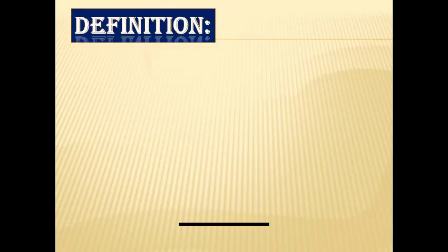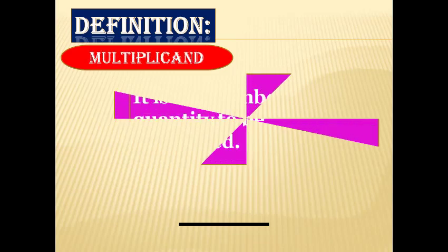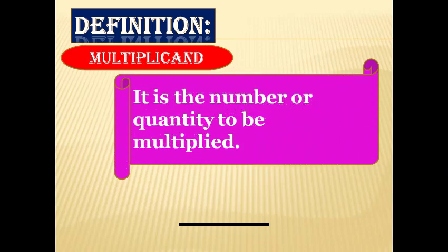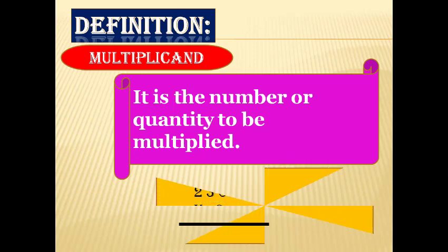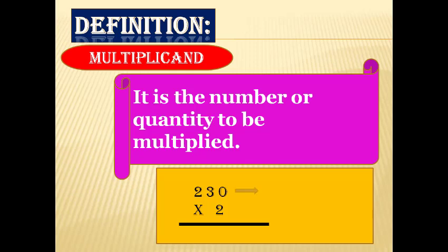Definition of multiplicand: It is the number or quantity to be multiplied. In this example, 230 multiplied by 2 — 230 is the multiplicand.